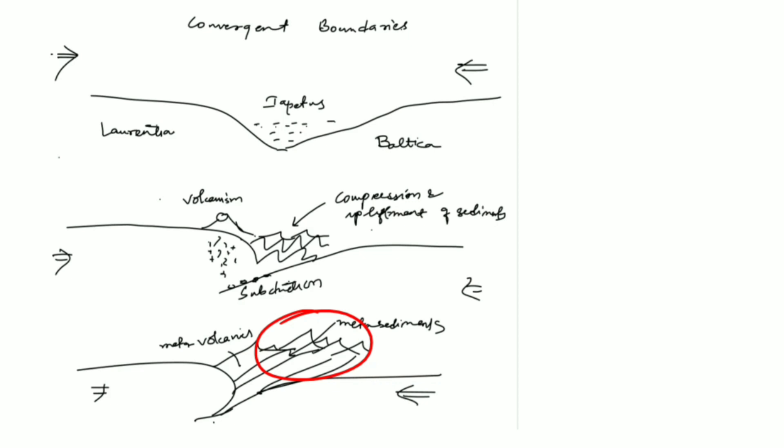These Caledonides were later rifted apart due to plate tectonics. The present-day Caledonides are present in parts of Greenland, Scandinavia, North America, and as you can see, the Scottish Highlands. So the Scottish Highlands are a part of the UK. Now let's move further to the topic.